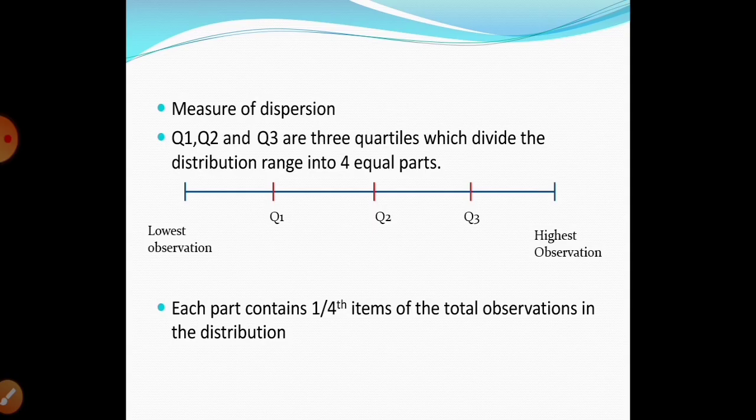Quartile deviation is also a measure of dispersion. If you plot your observations, you have a lowest observation and a highest observation. Quartiles divide the observations into four equal parts — Q1, Q2, and Q3 — which divide the distribution range into four equal parts, each containing one-fourth of the total observations.